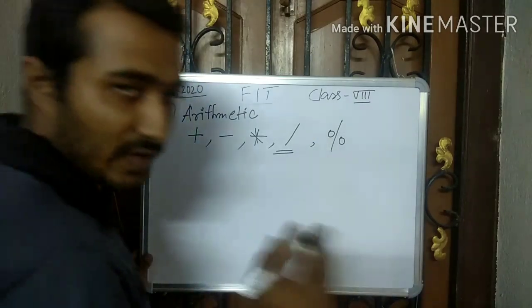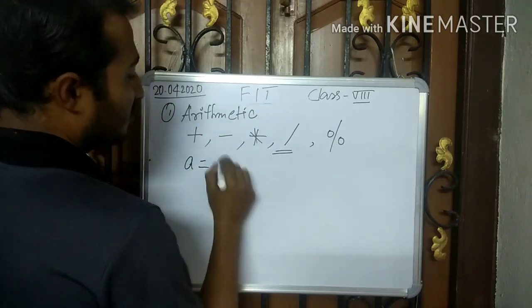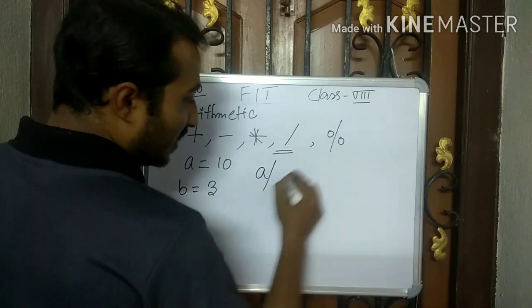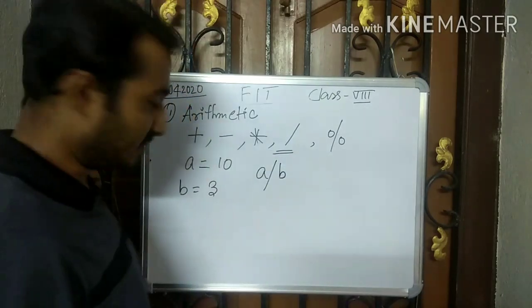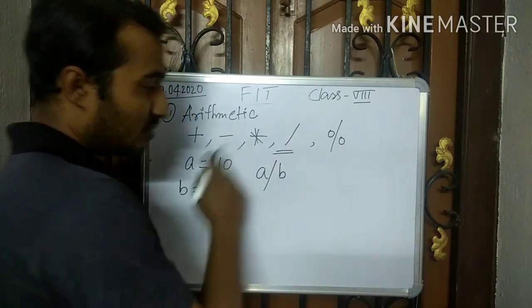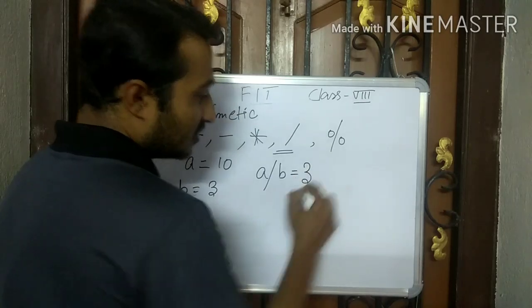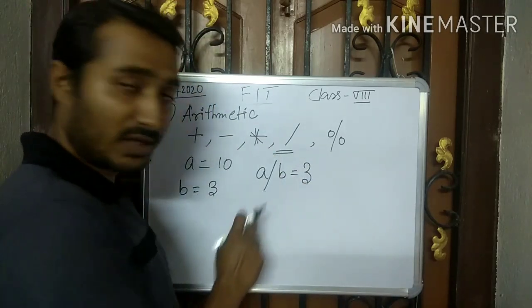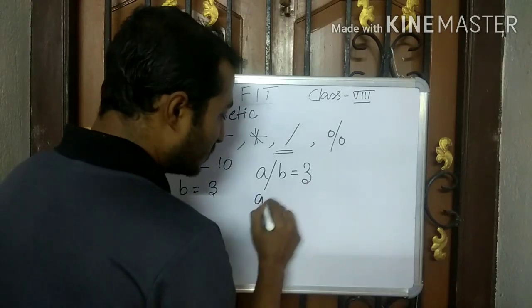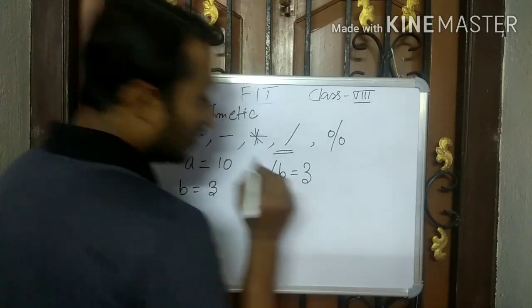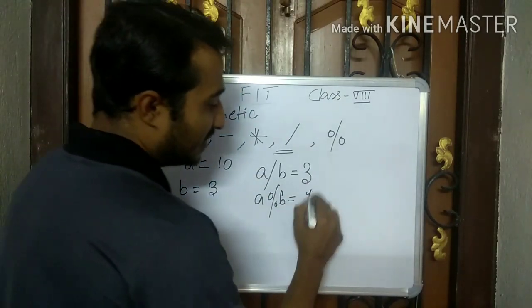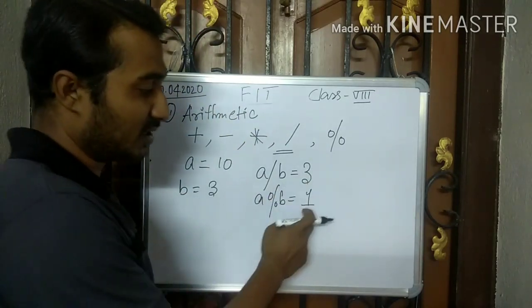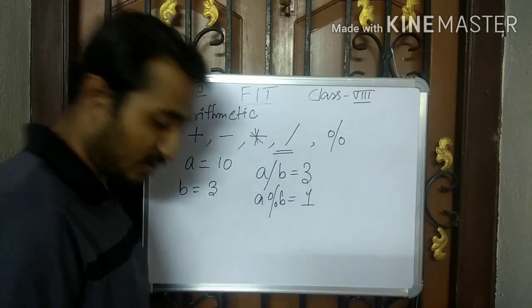Suppose two values are there: a equals to 10 and b equals to 3. If we do integer division, a divide b, the quotient is 3. Using this operator we can get the quotient. And if we use a modulo b, then we will get the result 1. Because if we divide 10 by 3, the quotient will be 3 and the remainder will be 1.